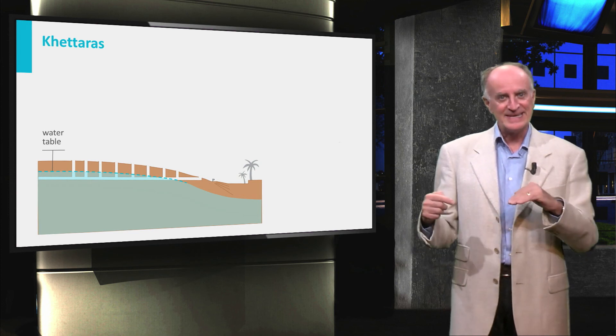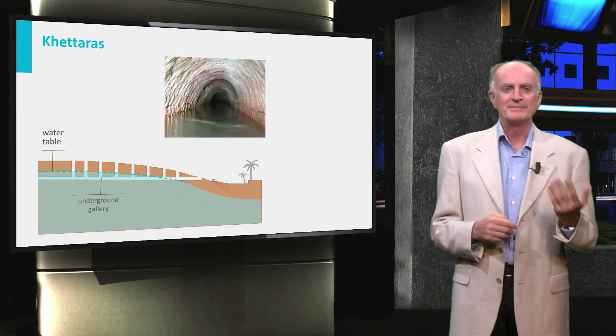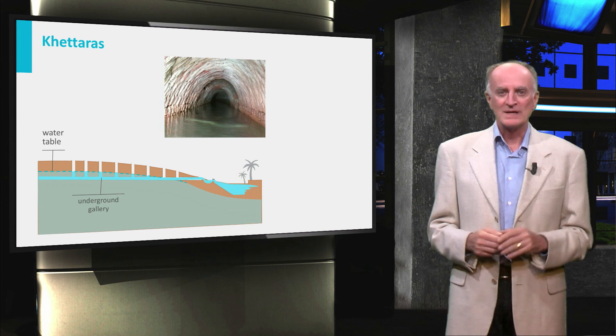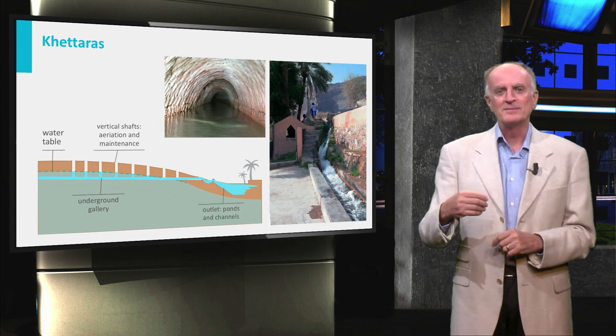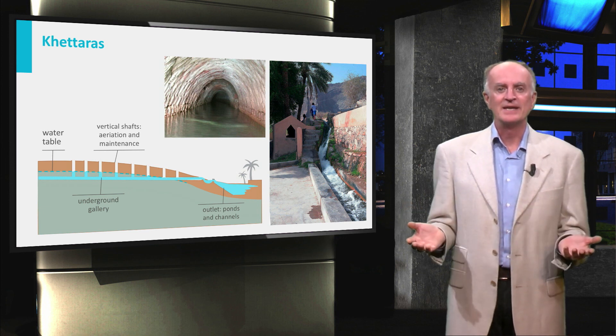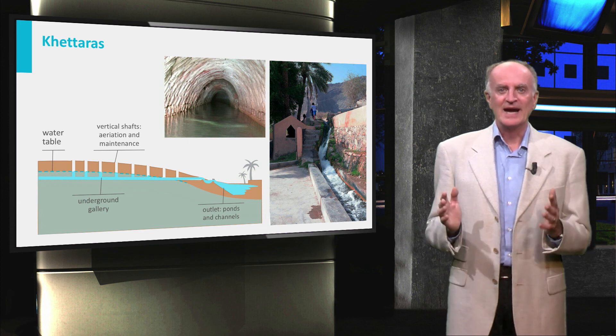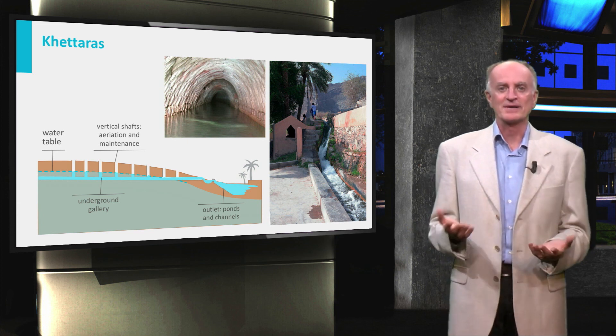They started then digging horizontal tunnels from the flank of the mountain to the interior of the hill. Once they hit the inclined water table, water started flowing, bringing life to the previously dry region, allowing human settlements and agriculture. The underground tunnels were then equipped with vertical shafts and other infrastructures.